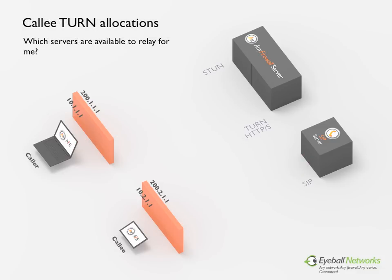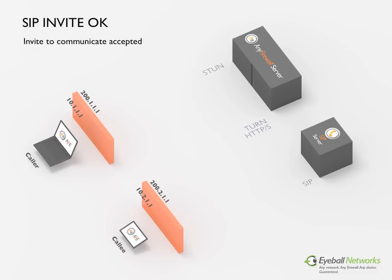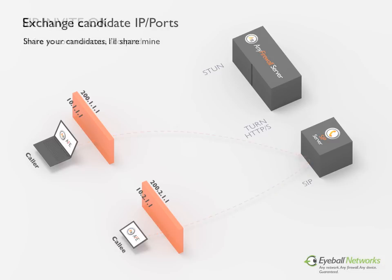When the callee has received a SIP invite message, it then performs the same TURN allocation the caller did previously, to find out if there are any relay servers available that could facilitate a call between itself and the caller. Having done its TURN allocations, the callee now sends an OK SIP message via SIP signaling, indicating it has received and accepts the invite and knows the options or candidates available to complete the call. Via SIP signaling, the caller and callee now exchange the information gathered during the STUN discovery and TURN allocations, sharing with each other the candidate IP addresses and ports they each have available to initiate a call with.